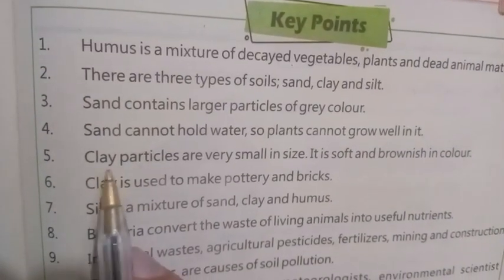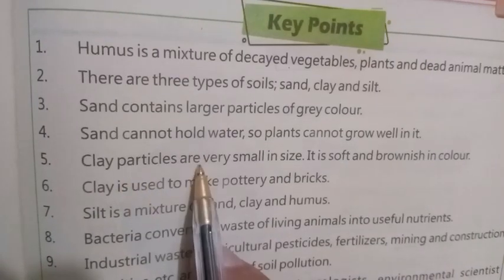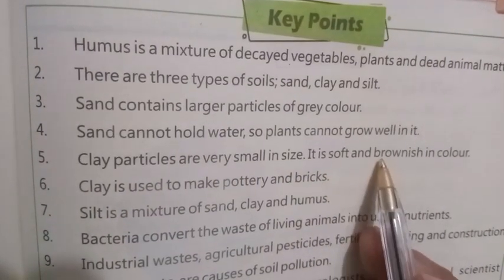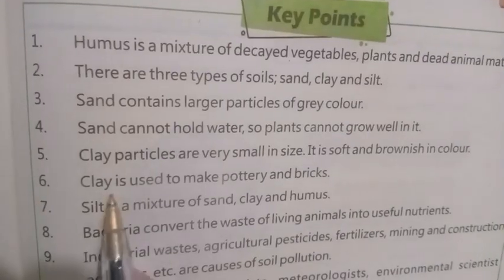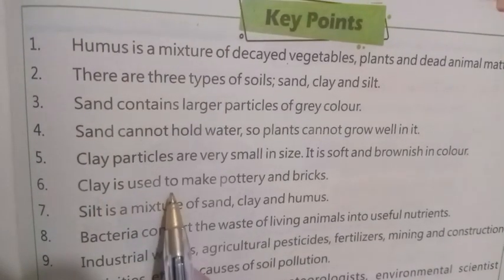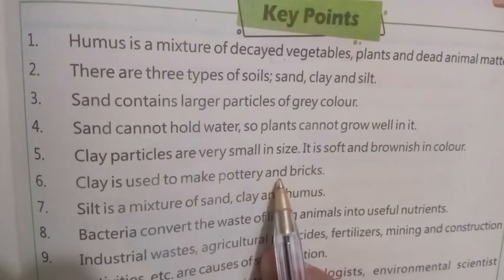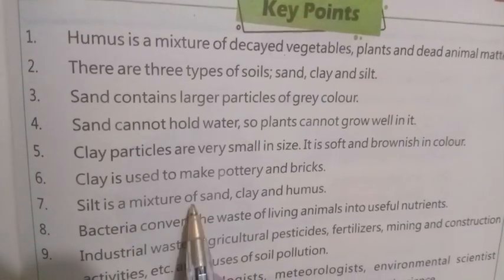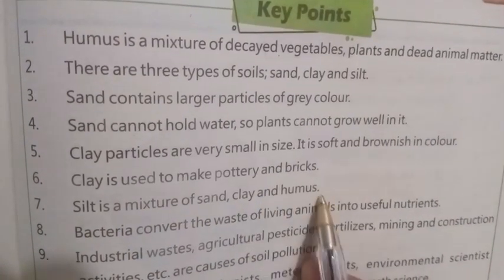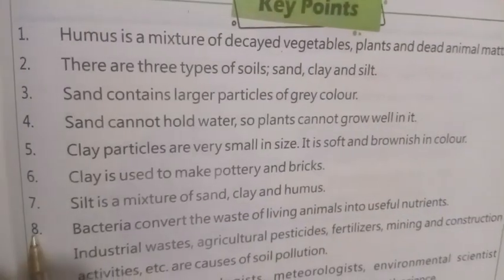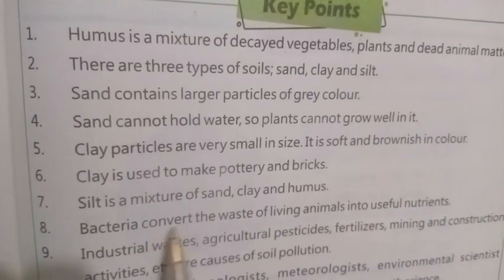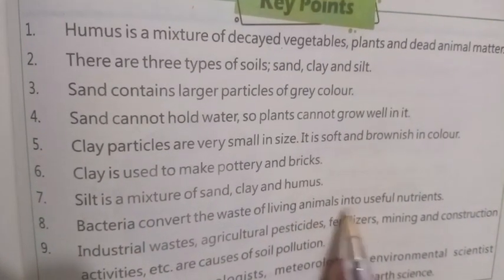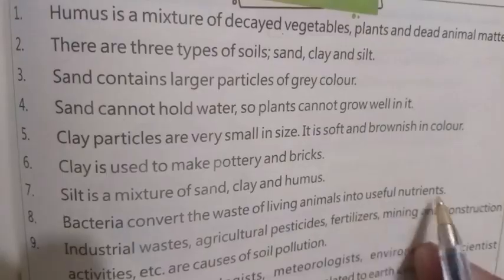Five — clay particles are very small in size; it is soft and brownish in color. Six — clay is used to make pottery and bricks. Seven — silt is a mixture of sand, clay, and humus. Eight — bacteria convert the waste of living animals into useful nutrients.